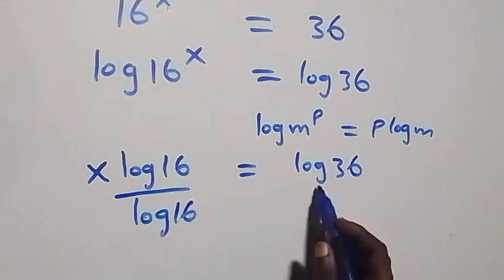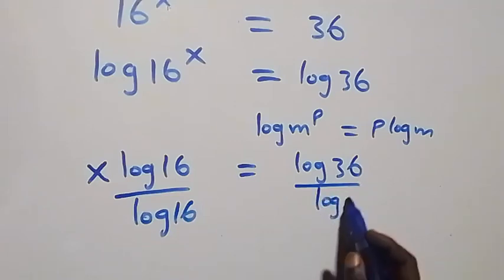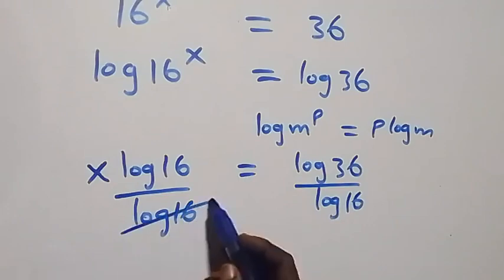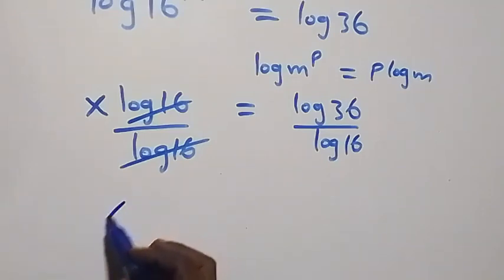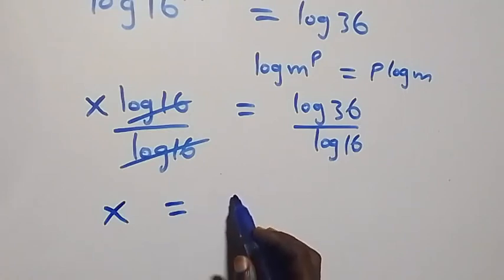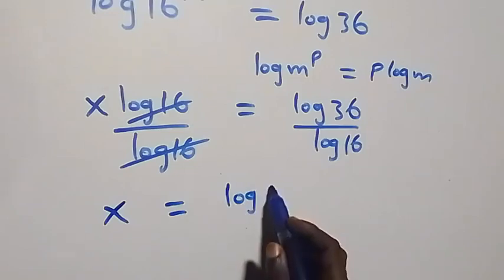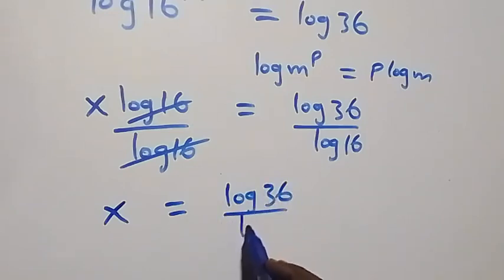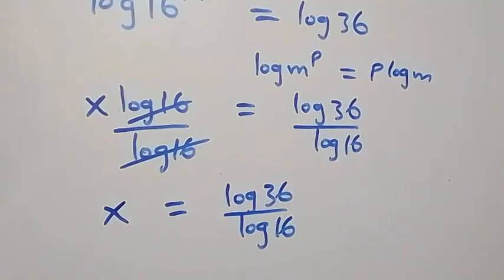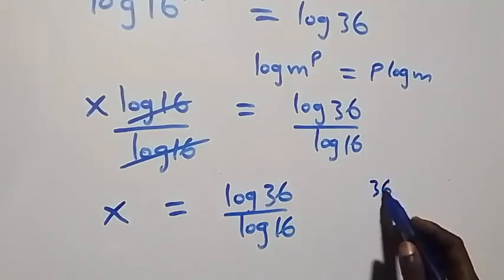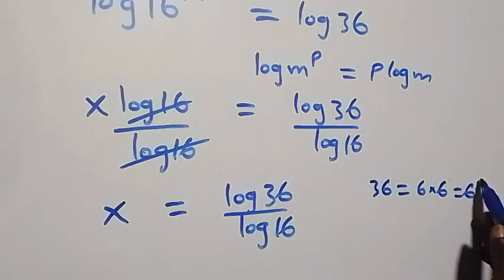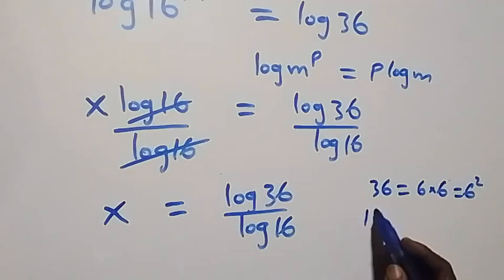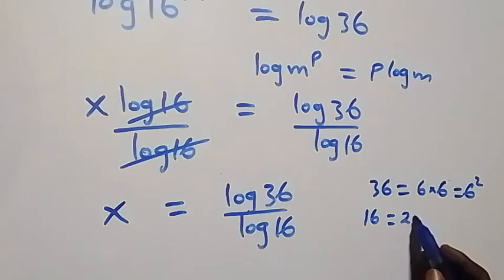From here, let's divide both sides by log 16. We divide by log 16 on both sides, then log 16 cancels out, and we have x equals to log 36 over log 16. From here, we can write 36 as 6 times 6, which is the same as 6 squared.